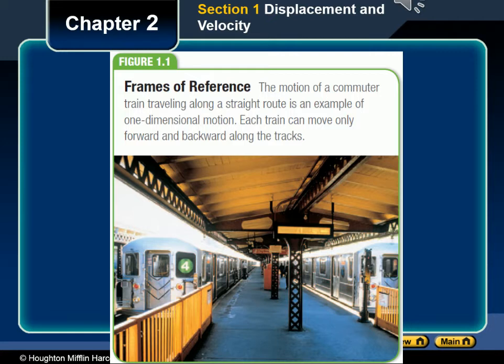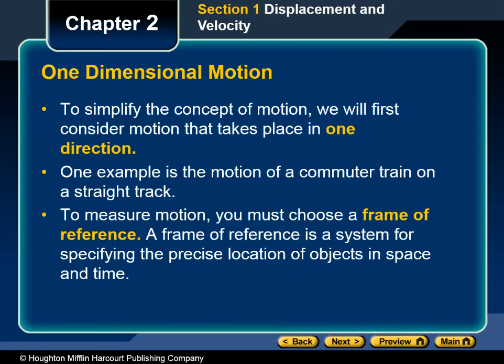Motion takes place over time and depends on the frame of reference. It seems simple to describe the motion of a train. As the train in figure 1.1 on the screen begins its route, it is at the first station. Later, it will be at another station farther down the tracks. But Earth is spinning on its axis, so the train, the stations, and the tracks are also moving. At the same time, Earth is moving around the Sun, the Sun and the rest of the solar system is moving through our galaxy, and this galaxy is traveling through space as well. When faced with a complex situation like this, physicists break it down into simpler parts. One key approach is to choose a frame of reference against which you can measure changes in position.